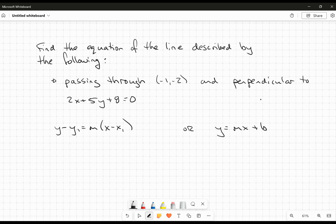And I know that it's perpendicular. And remember what that means - this means we're looking at the negative reciprocal of the slope that we're given. So we're given this line 2x + 5y + 8 = 0. I need to figure out the slope of that line.